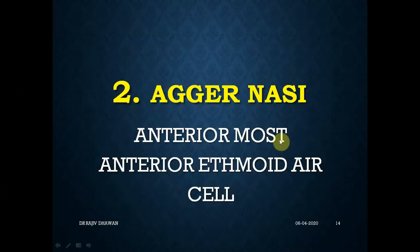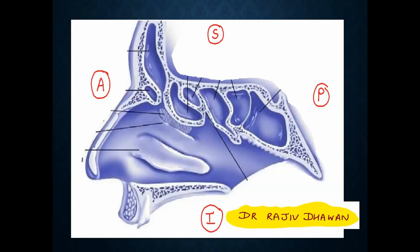The second constant cell is agger nasi. The specialty of agger nasi is that it is the anterior-most anterior ethmoid air cell. It is a constant cell, but its key feature is that it is the most anterior - it is in front of even the bulla ethmoidalis. If you take a section of the ethmoid bone, the most anterior cell in that section would be the agger nasi.